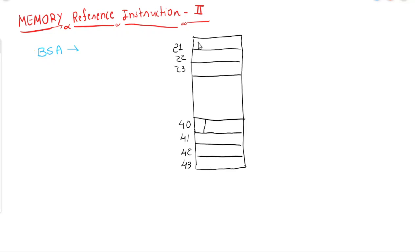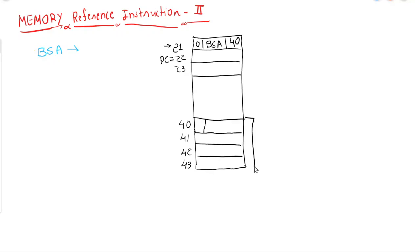Let us assume that here we are having an instruction at location 0. Here we are having an instruction on location 21. At the same time, the program counter will be pointing towards 22, so the value of the program counter will be 22. This is the subroutine which we want to execute.